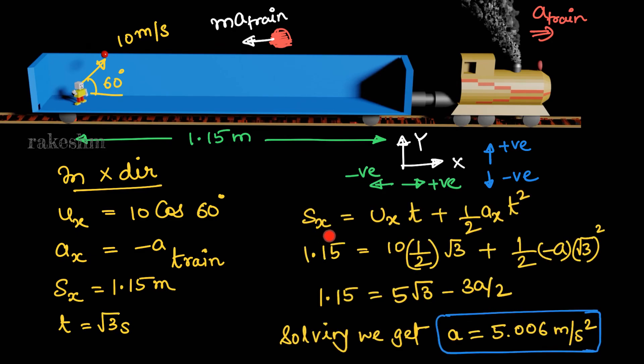So in x direction, displacement in x direction is 1.15, ux is 10 cos 60 which is 10 into 1 by 2, time is root 3 seconds, plus half ax into t square. We just simplify this and solve this, we get the acceleration of the train as 5.006 meters per second square.